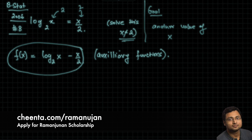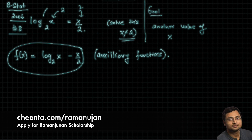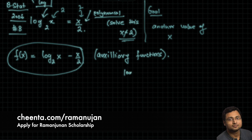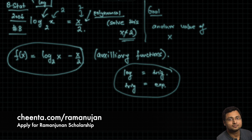The main problem with this type of equation is that the two types of functions on the two sides are different — in this case, logarithmic and polynomial. It could be log and trig, or trig and exponential, so there could be variants of this problem. Since the two sides have two different types of functions, it becomes hard to analyze them by non-calculus methods. We'll see how to analyze this using calculus.